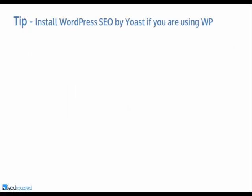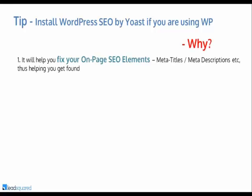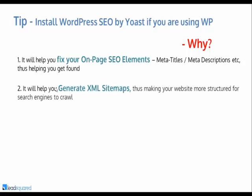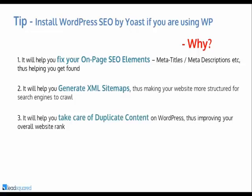Before moving to the next elements of on-page SEO, a quick tip: if you use WordPress, please install 'WordPress SEO by Yoast.' It's a very useful plugin that helps you fix a lot of SEO elements — meta titles, meta descriptions, and more. It will help you generate XML sitemaps automatically, making your website more structured for search engines to crawl, and it will help you take care of duplicate content as well on WordPress, improving your overall website rank.